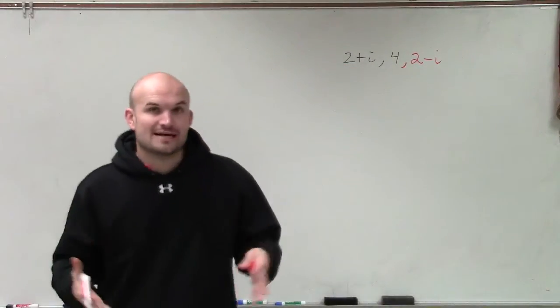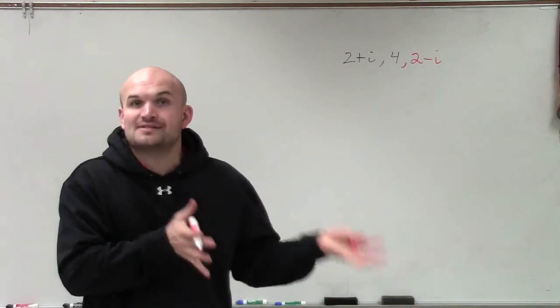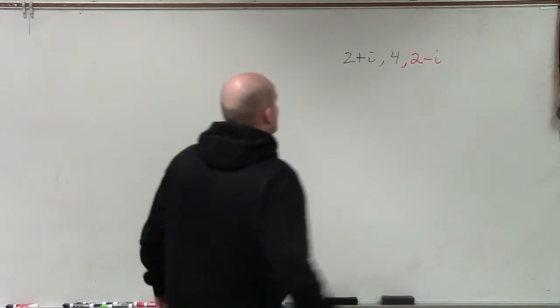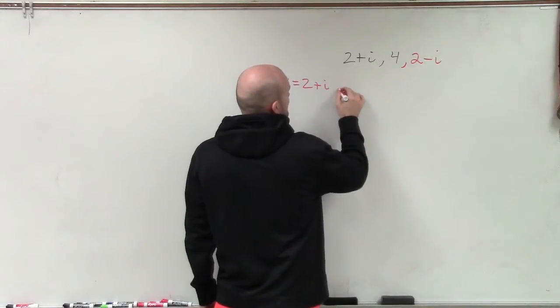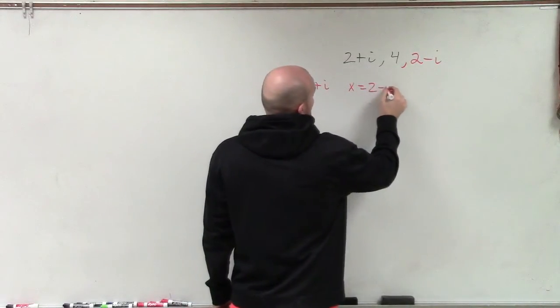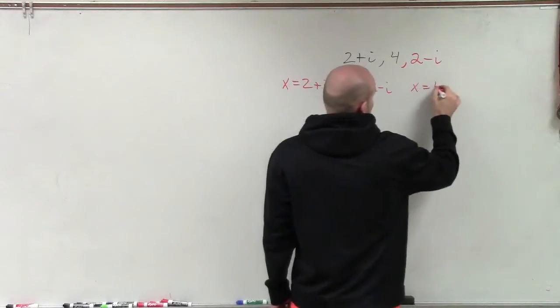Now again, by following our steps, what we're going to do is we're going to take each one of our zeros and set them equal to x, and then set them equal to 0. So in this case, I have x equals 2 plus i, x equals 2 minus i, and x equals 4.